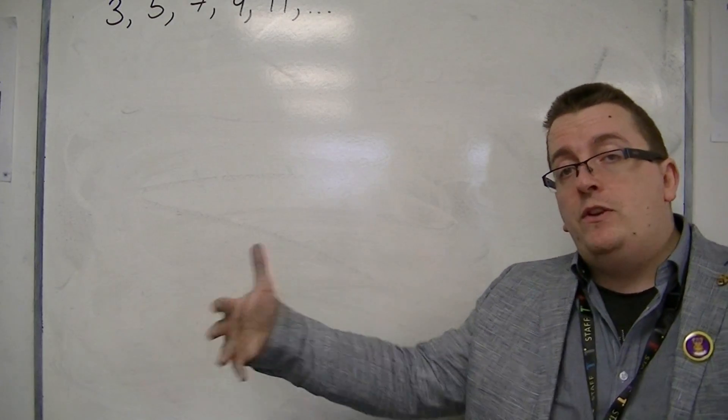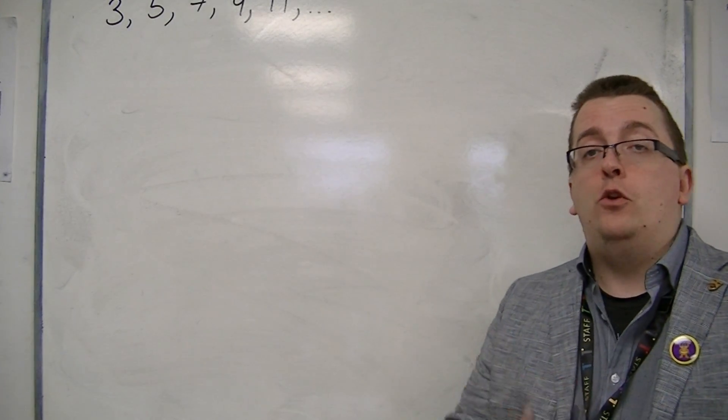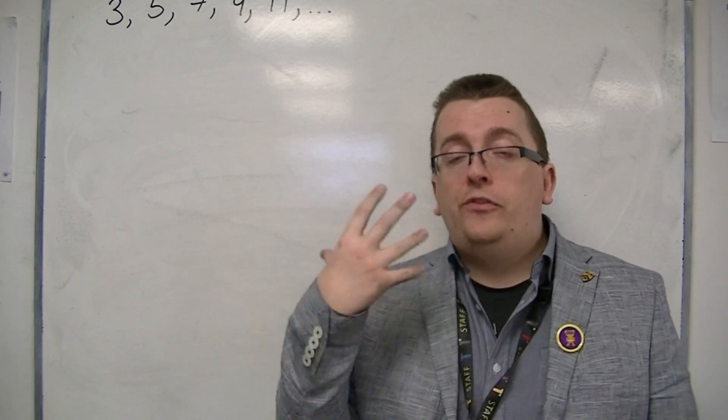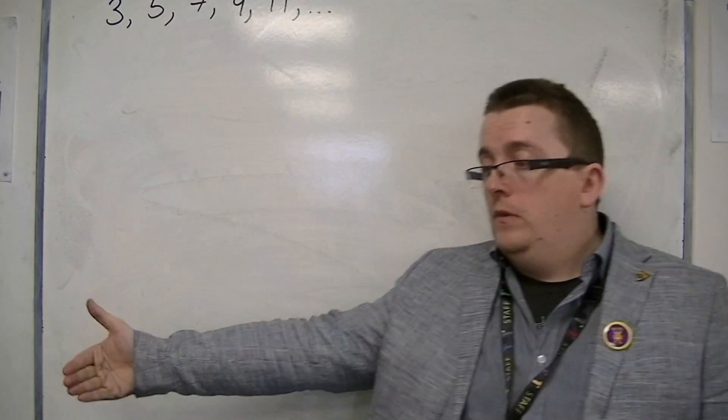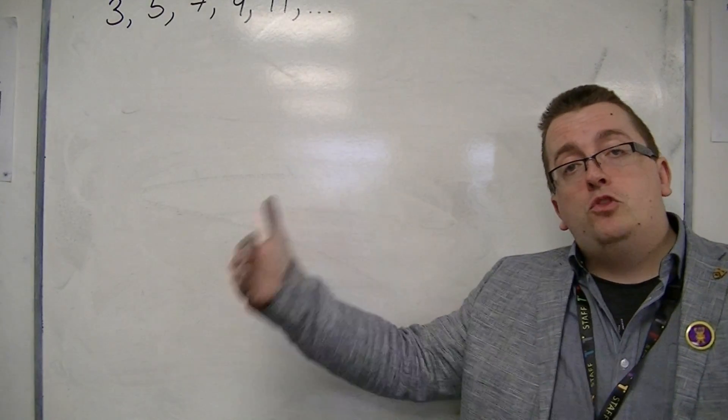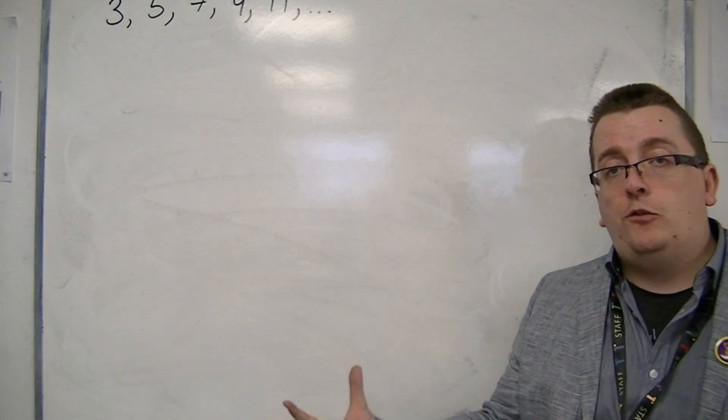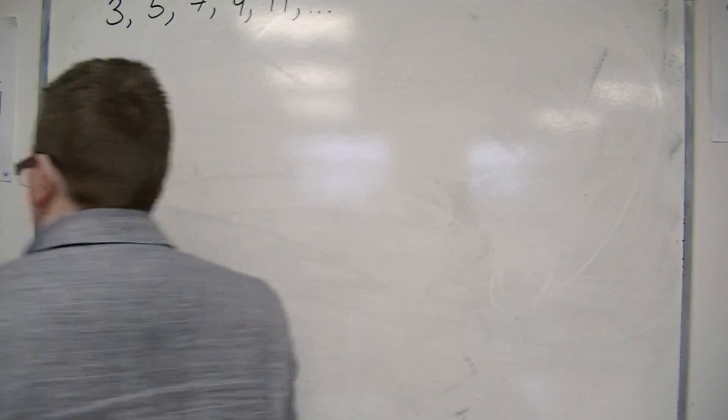So every time I'm moving along one place, I'm adding on two. And that is what defines an arithmetic sequence. Each term, you just need to add or subtract a number from it to get to the next one, and that is a consistent number.